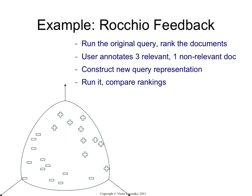Let's look at it graphically. What happens when you do Rocchio? Here's our space — we have three terms in our vocabulary. This was our query. Now, in relevance feedback, you rank the documents. You rank them by the cosine with the query.